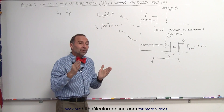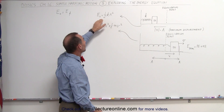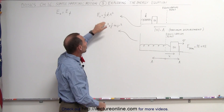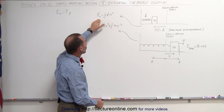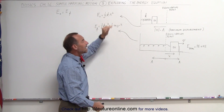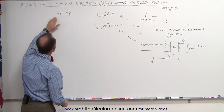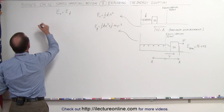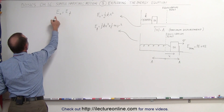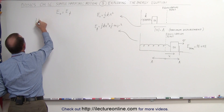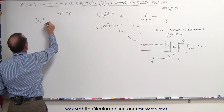And since A represents the maximum displacement, the maximum energy — or the energy initially that we have stored into the system — is equal to one half kA squared. That goes on the left side of this equation, so the initial energy would be one half kA squared.